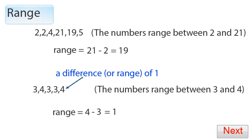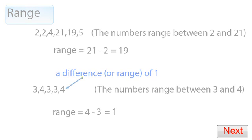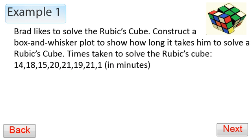Example 1: Brad likes to solve the Rubik's Cube. Construct a box-and-whisker plot to show how long it takes him to solve a Rubik's Cube. Times taken in minutes are 14, 18, 15, 20, 21, 19, 21, and 1. We can see he had this really good day where he solved it in one minute. Most of the time it's between 14 and 21.